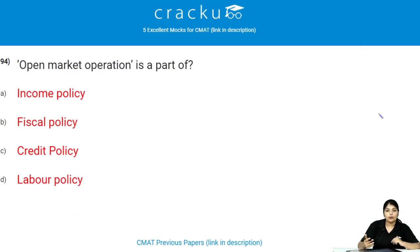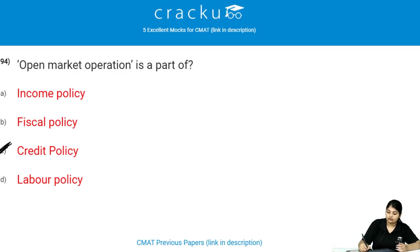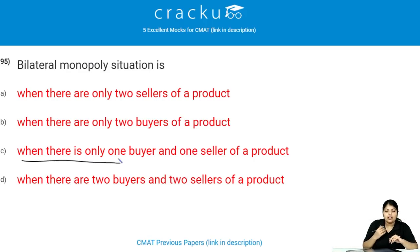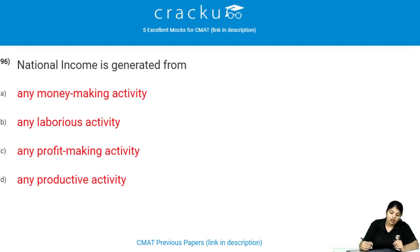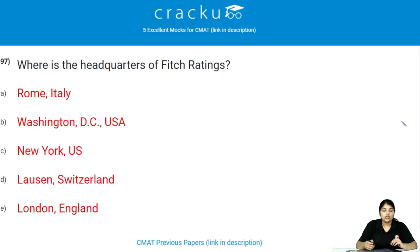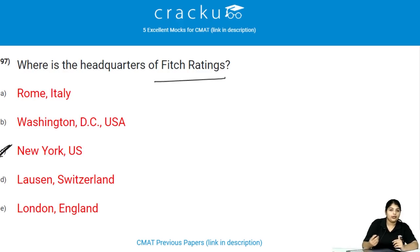Open market operation is a part of credit policy. Bilateral monopoly is a situation when there is only one buyer and one seller of the product. National income is generated from any money-making activity. The headquarters of ICRA Ratings is in New York, USA.